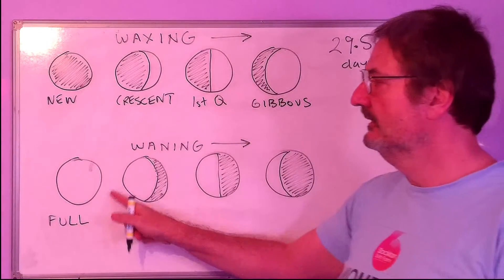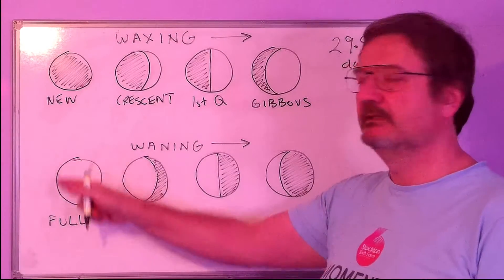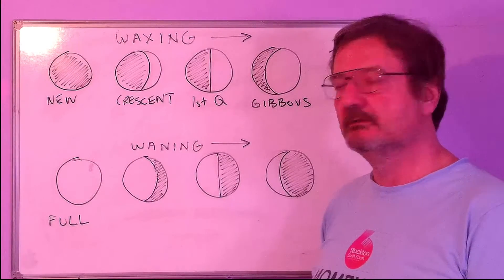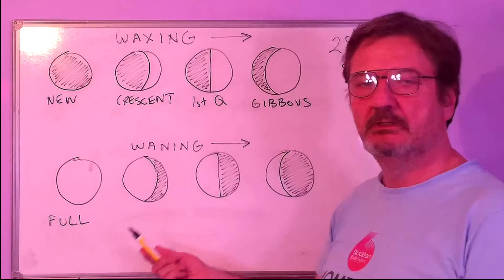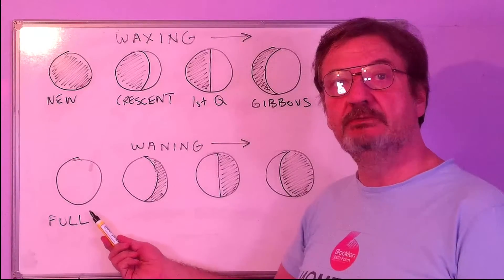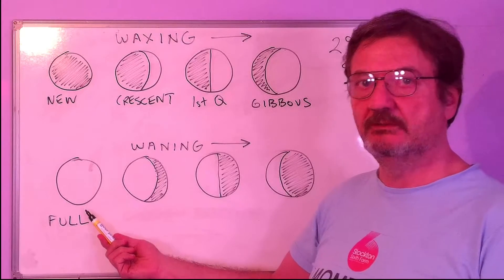This is a full moon. We can see all of one side of the moon, all of the side of the moon that the sun's light is shining on. On a full moon, be very careful of werewolves. Be very careful of lunatics as well when there's a full moon.